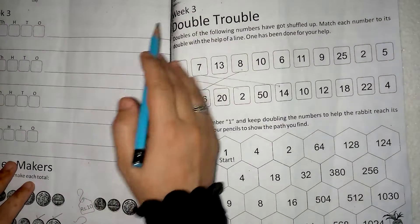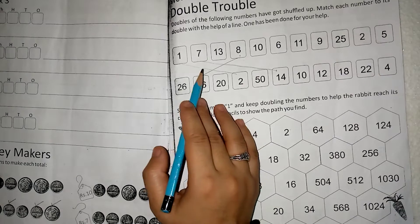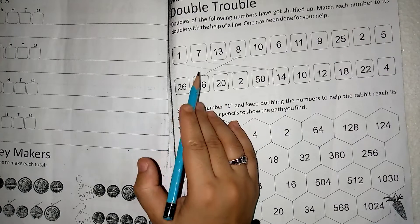Okay students, now come to next topic which is double trouble. Now, what do you have to do? You have given two rows and you will show different numbers in two rows.